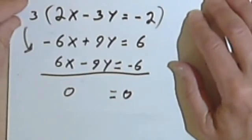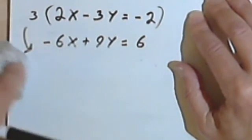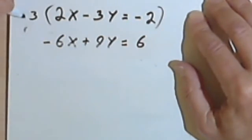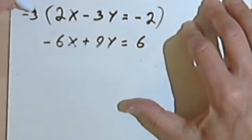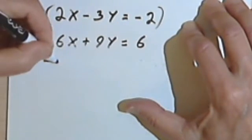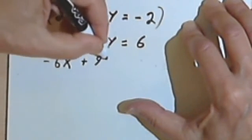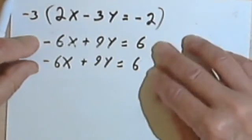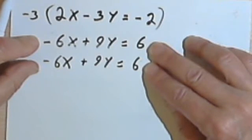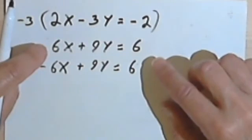Let's take another look at this and see how this happened. So instead of multiplying by 3, let's multiply this equation by negative 3. If I do that, I've got negative 3 times 2x is negative 6x. Negative 3 times negative 3y is positive 9y. And negative 3 times negative 2 is 6. And if you look at the equations now, they're both exactly the same. So what that means is the two equations I started with originally were just two different forms of the same equation.